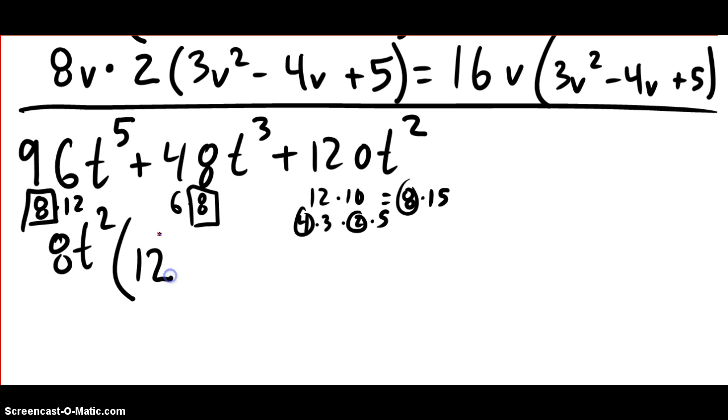So we're going to go like 8 on the outside. So then we have 12. And then t squared times what is t to the 5th. This is going to be t cubed here. 8 times what is 48? 6. t squared times what is t cubed? It's t. Plus 8 times what is 120? We figured out that it's 15. There's a t squared here. T squared here. We don't need anything. Notice there's three terms separated by plus. There's three terms inside the parentheses. They're always going to match.